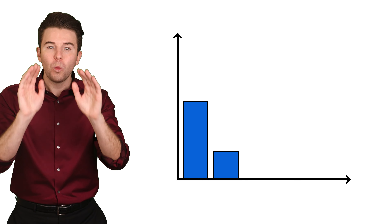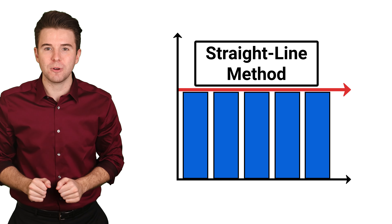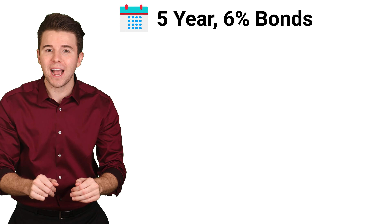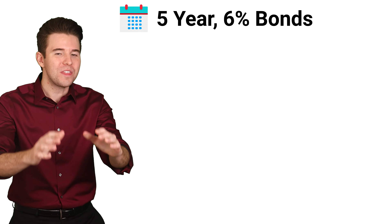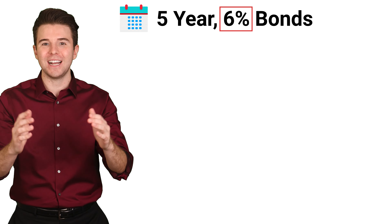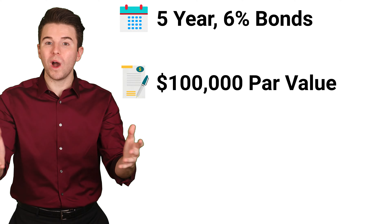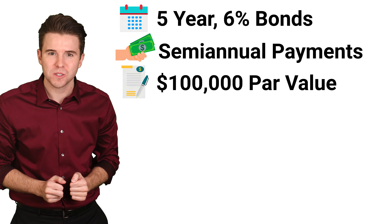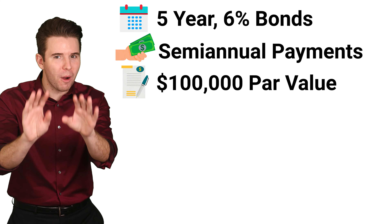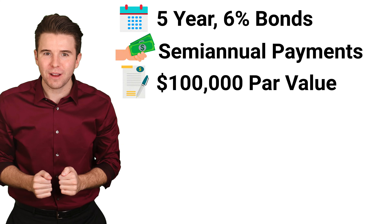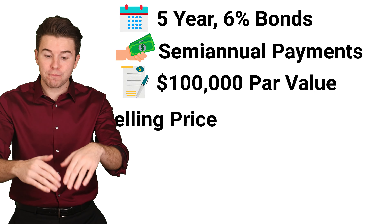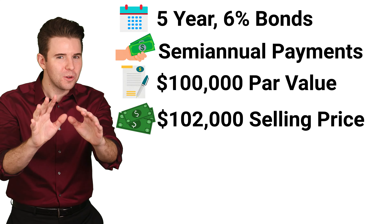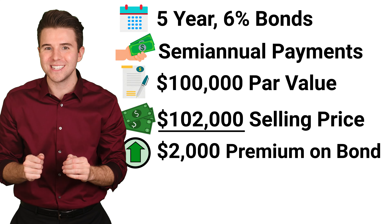In this example, we will show the straight-line amortization method. Let's assume a business issues 5-year bonds on December 31st with a 6% annual contract rate. The par value of these bonds is $100,000 and includes semi-annual interest payments. However, the market rate for the bonds is lower than the contract rate and therefore they sell at a premium price of $102,000, giving us a premium of $2,000.